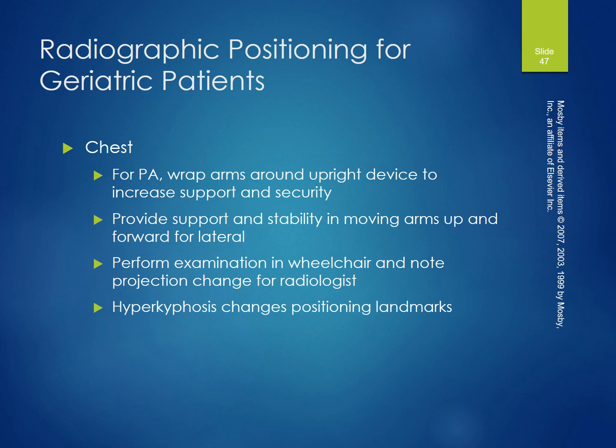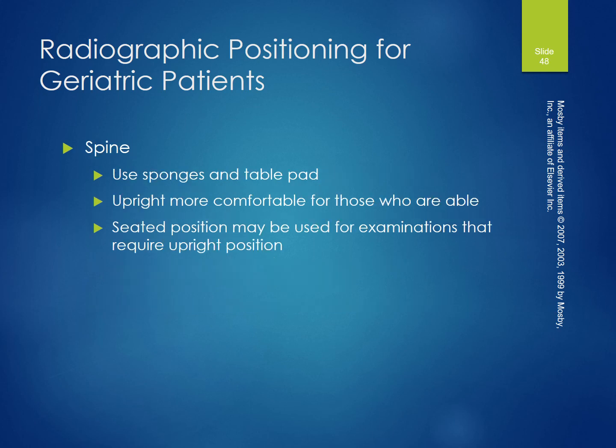Radiographic positioning for geriatric patients: for a chest PA, have the patient wrap arms around the upright device to increase support and security. Provide support with stability when moving arms up and forward for the lateral. The examination can be performed in a wheelchair with no projection changes for the radiologist. Hyperkyphosis changes positioning landmarks of the spine. Use sponges and table pads; an upright and more comfortable seated position may be used for examinations that require an upright position.